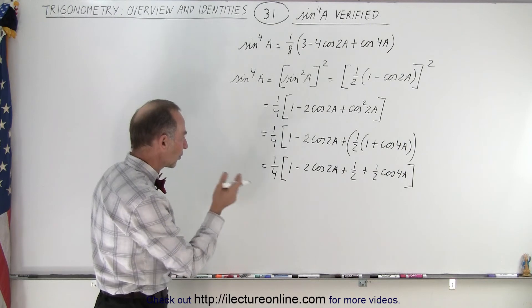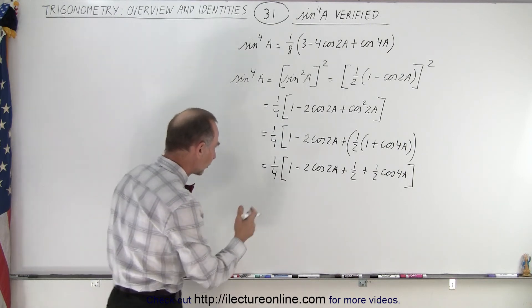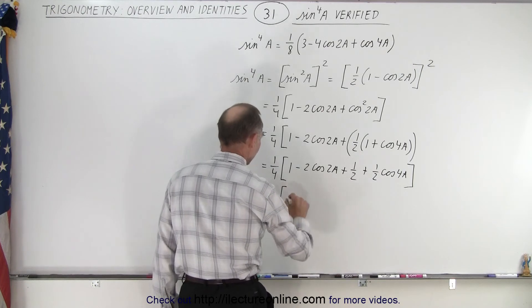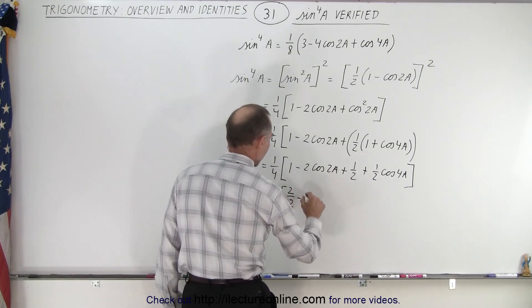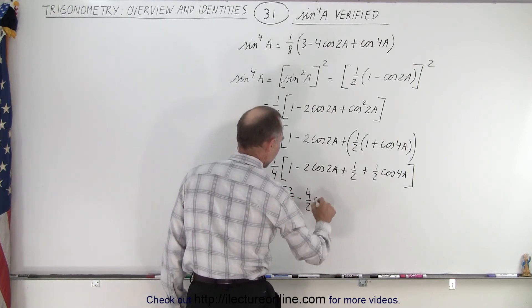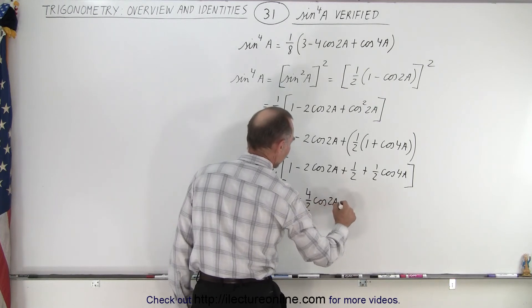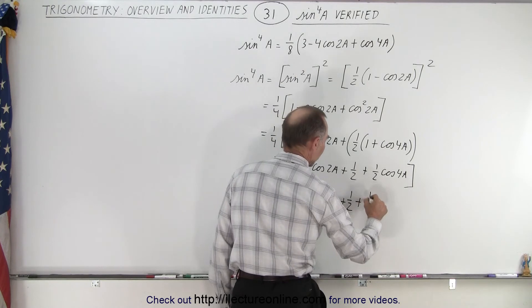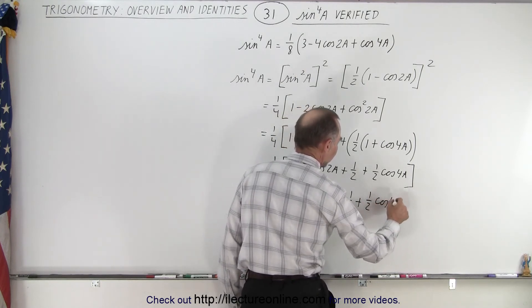So now I want to factor out a 2 or 1 over 2, so what I'm going to do is as follows. This is equal to 1/4 times 2 over 2 minus 4 over 2 times the cosine of 2a plus 1/2 plus 1/2 times the cosine of 4a.